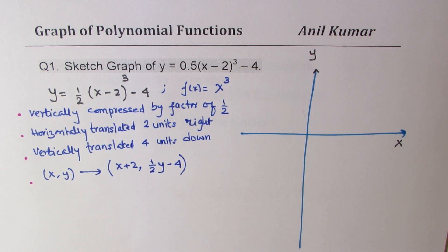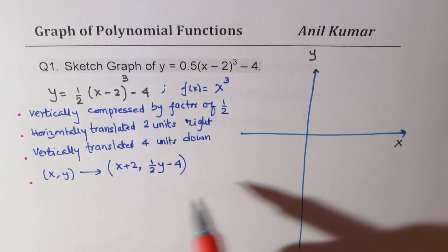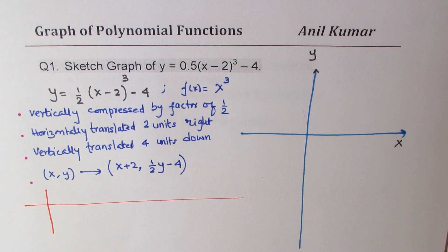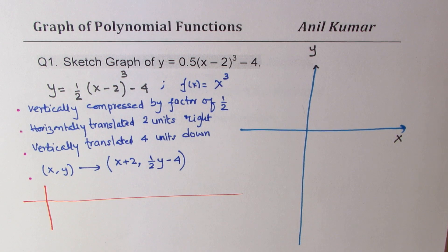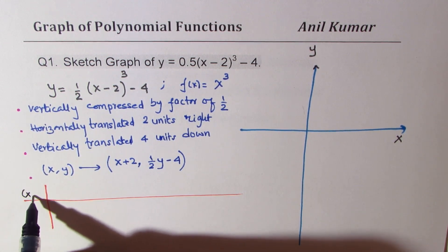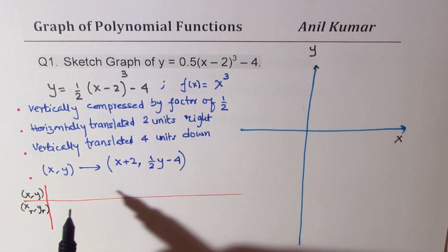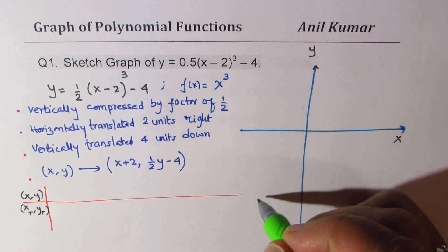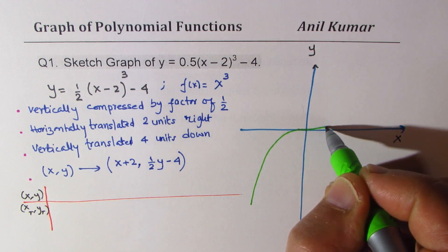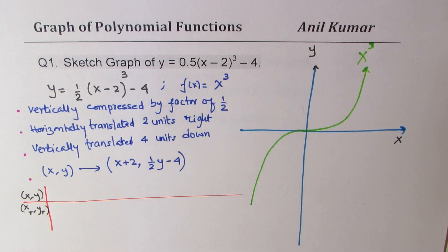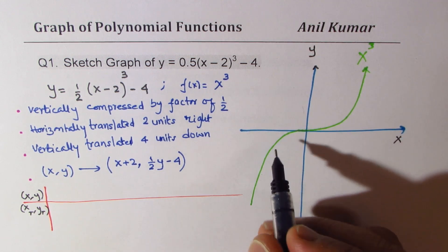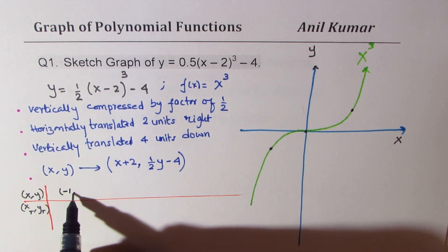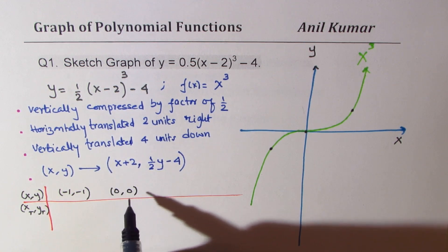Sometimes we prefer to take important points into consideration and then sketch the graph — we follow the method of five points. We write down five points of interest: original function points and the transformed points. The critical points of the cubic will be: minus 1 gives minus 1, zero gives zero, and one gives one. If we apply the transformation, substituting minus one: minus one plus two gives plus one for x, and the y-value becomes negative 4.5.